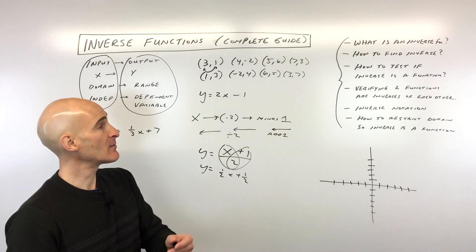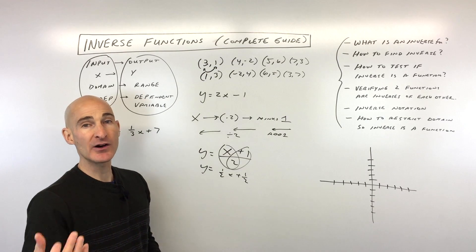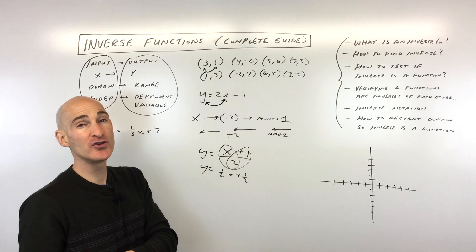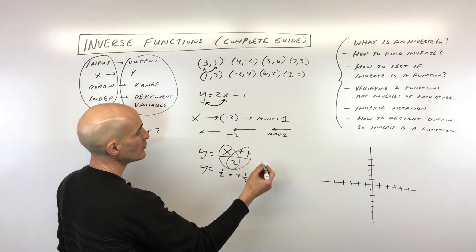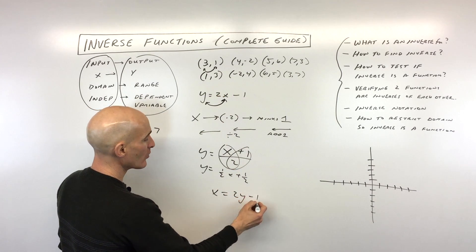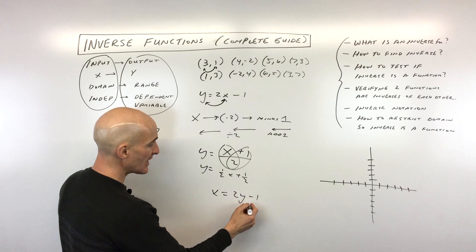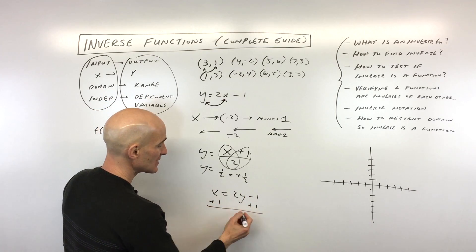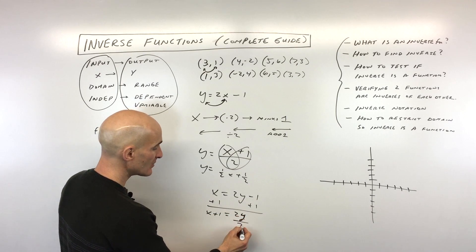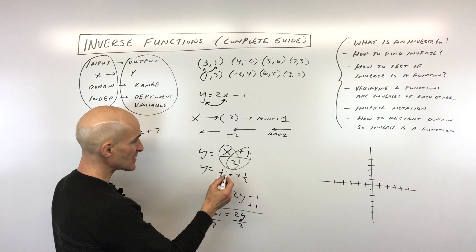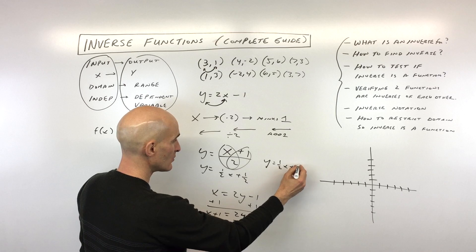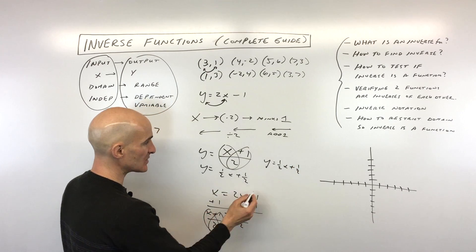The algebraic way is to interchange x and y, then solve for the new y. Wherever you see y, put x; wherever you see x, put y. Add one to both sides to get 2y equals x plus 1, then divide everything by two. You can see this gives y equals one-half x plus one-half — the same result as the intuitive method.